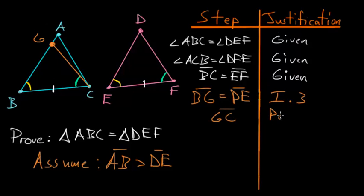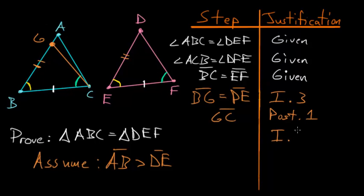Next, we connect C and G, creating line GC due to Postulate 1, which says we can always connect two points with a line. Now BG equals DE, the bases BC and EF are equal, and the angle between those equal sides — angle ABC and angle DEF — are equal. So by Book 1, Proposition 4, triangles GBC and DEF are congruent, using the Side-Angle-Side theorem.